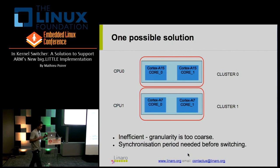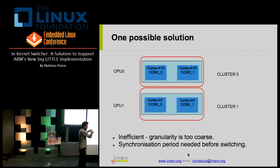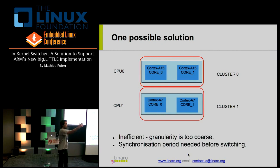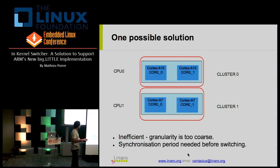One possible approach for CPU coupling was to integrate horizontally: when the system is lightly loaded use the small cluster, and as demand increases move to the big cluster. The problem with this approach is that the granularity is too coarse — it's either all or nothing, small cluster or big cluster, with no intermediate power savings. It also introduces a synchronization period we didn't want.